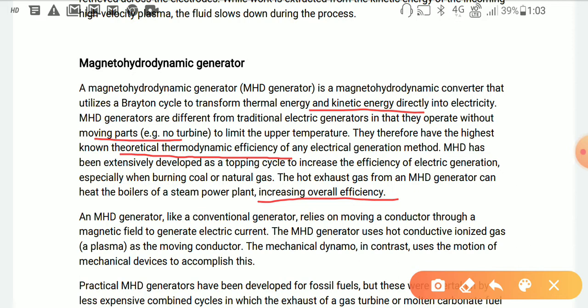An MHD generator, like a conventional generator, relies on motion of a conductor through a magnetic field to generate electric current. The MHD generator uses hot conductive ionized gas or plasma as a moving conductor. The mechanical dynamo in contrast uses the motion of mechanical devices to accomplish this.